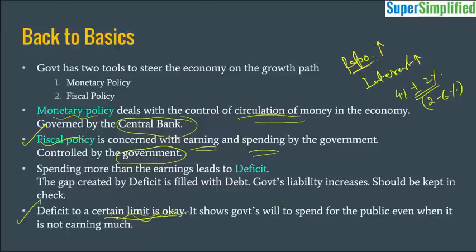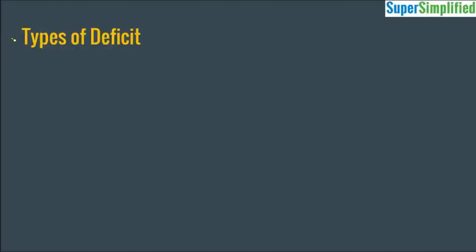A deficit to a certain limit is okay because it shows the government's will to spend for the public even when it is not earning much, but it should be controlled and kept in check. Now let's see what are the types of deficit. Before that, we'll see what are the types of budgets.